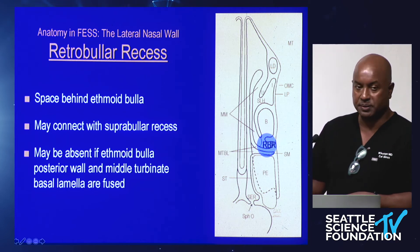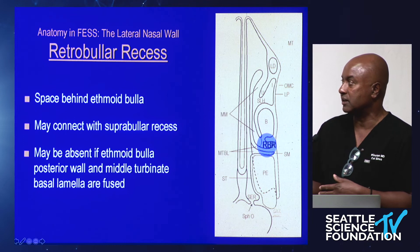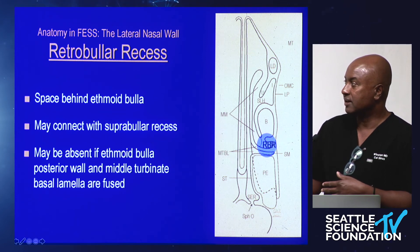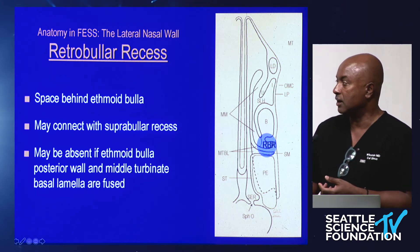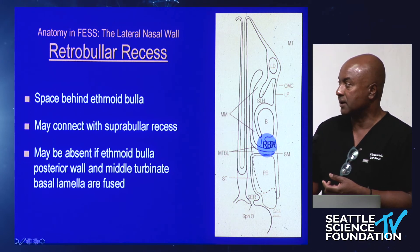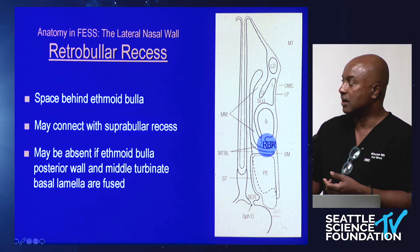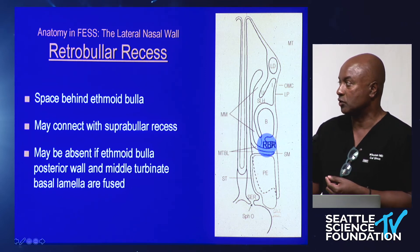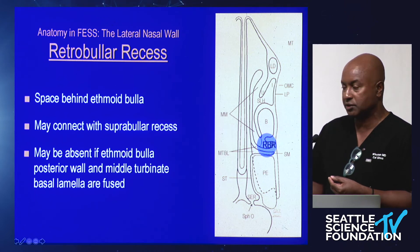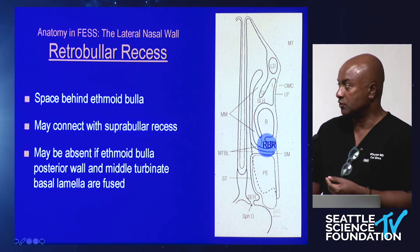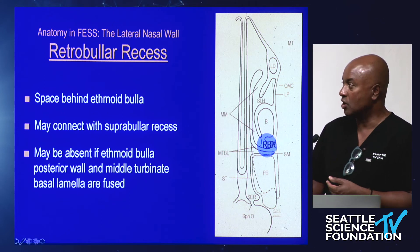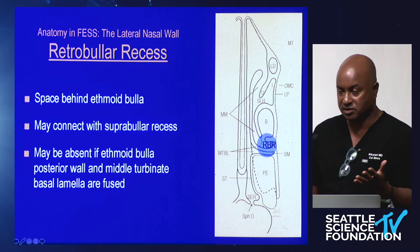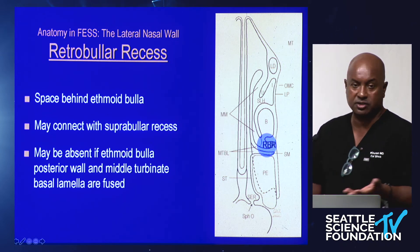The retrobulla recess is a key anatomical landmark for anterior-to-posterior dissection. If you blow straight through it too fast, you'll damage the posterior wall of the orbital cavity. Finding the basal lamella of the middle turbinate in the retrobulla recess lets you identify the anterior portion of your medial orbital wall — then stop — and find the posterior portion of the medial orbital wall after passing through the basal lamella. It's a go-go-go-stop-go approach: knowing you've identified the medial orbital wall after passing the basal lamella.